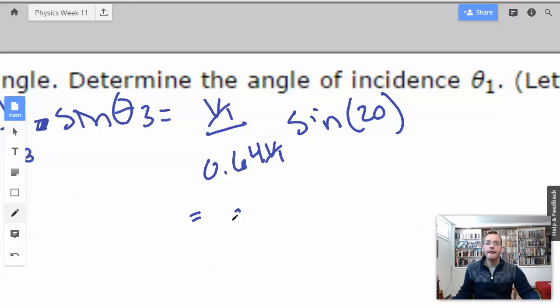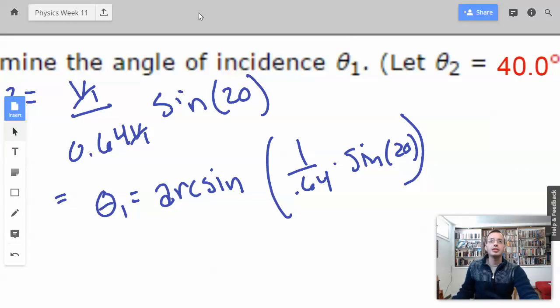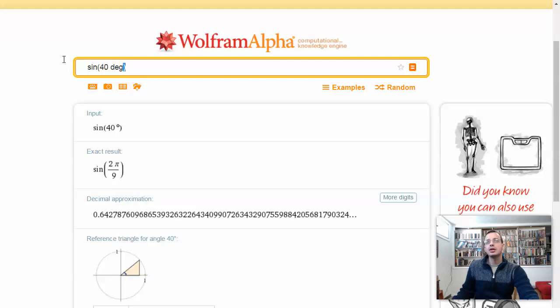So then theta 1 equals arcsine of 1 divided by 0.64 times sine of 20. This might actually work.